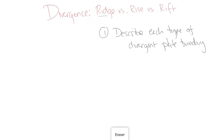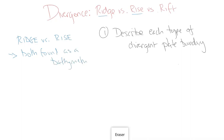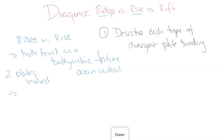Let's first look at the ridge and the rise. These two are both oceanic — both found as a bathymetric feature, which means they are found on the ocean floor and they're part of the ocean crust. They're both divergent, so the plates are spreading away from a spreading center.